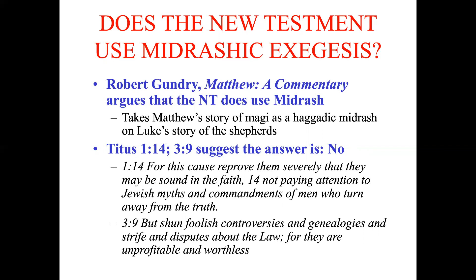Titus 1:14 says: 'For this cause reprove them severely that they may be sound in the faith, not paying attention to Jewish myths and commandments of men who turn away from the truth.' These Jewish myths sound like Midrashic-type interpretations. Then Titus 3:9: 'But shun foolish controversies and genealogies and strife and disputes about the law, for they are unprofitable and worthless.' This suggests that the whole rabbinic style of learning by debates was not well received by Paul and the early church.